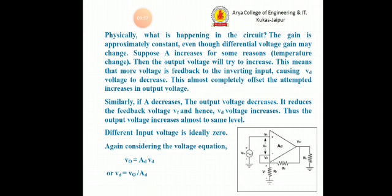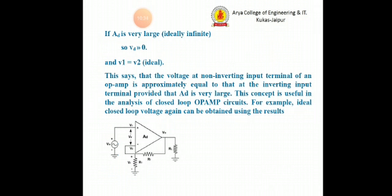The differential input voltage is ideally zero. Considering V0 = AD·VD, we can write VD = V0/AD. Since AD is quite large — ideally infinity but practically very large — VD will be almost equal to zero, and we will see that V1 equals V2, which is the ideal case. This says that the voltage at the non-inverting terminal of an op-amp is approximately equal to that of the inverting input terminal, provided AD is very large. This concept is useful in the analysis of the closed loop op-amp circuit.